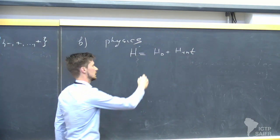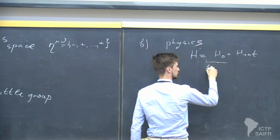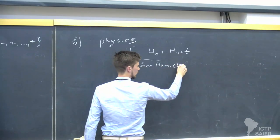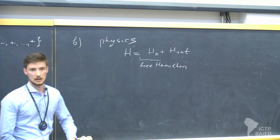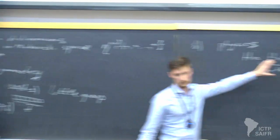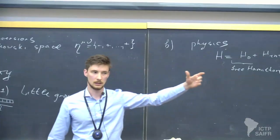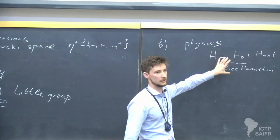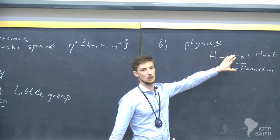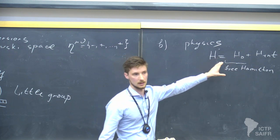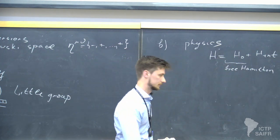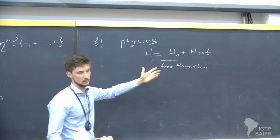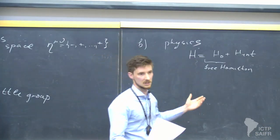H0 is the free Hamiltonian. However, this free Hamiltonian's mass spectrum should be the mass spectrum of the actual full quantum field theory — so for instance it contains all composite operators, like pions. H interaction should not be seen in general as a small perturbation.